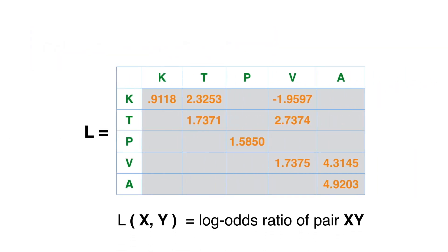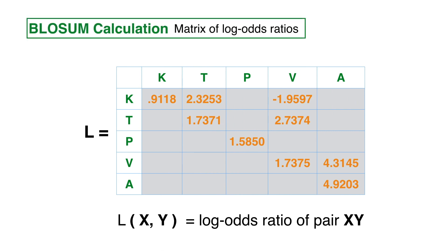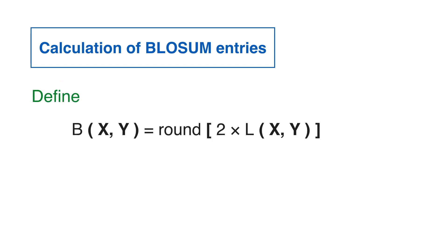Matrix L shows the log odds ratio of the observed pairs in our block. The final step in the BLOSUM calculation is the scaling and round off of these values. As in BLOSUM, we round off to the first decimal place the values of matrix L scaled up by 2. Here is the result.